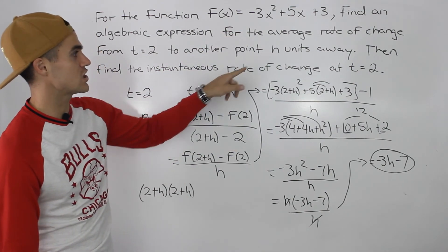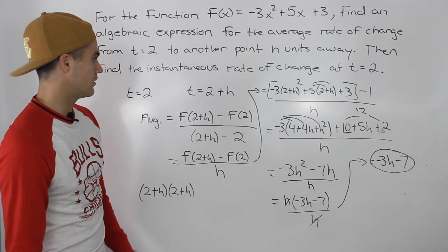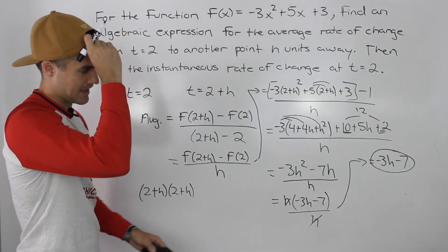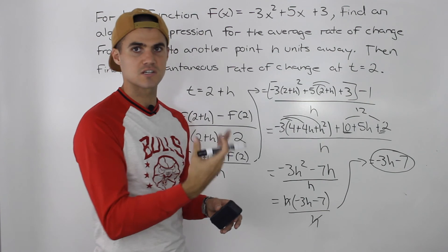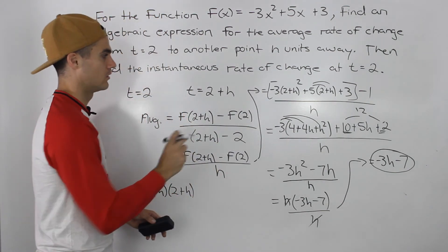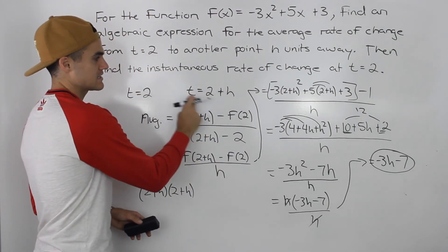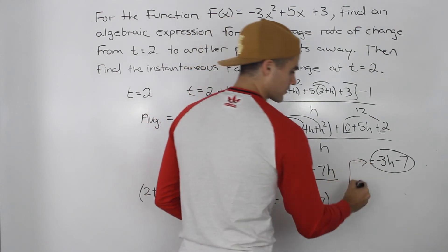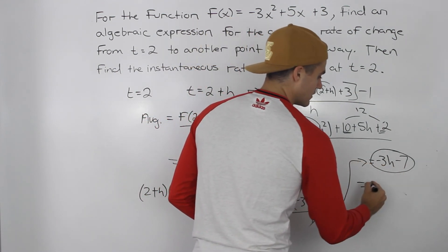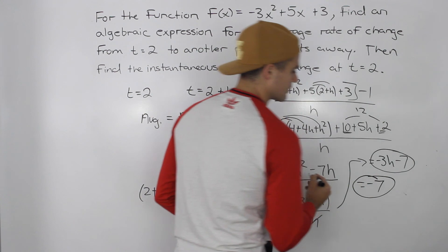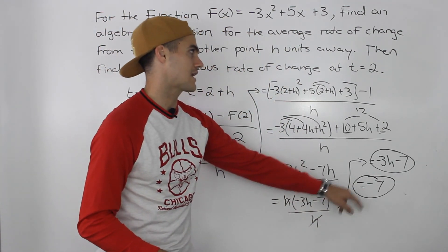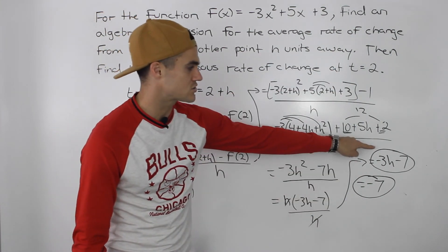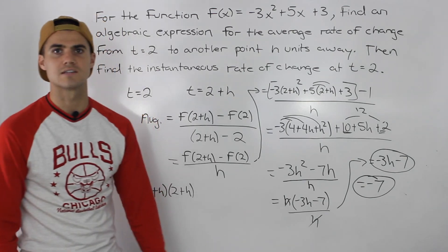Then we have to find the instantaneous rate of change at a t value of 2. To do that, we use the same process but let h approach 0, because we want h to be very small — we want this next t value to be very close to 2. So we plug in 0 for h, and we end up getting negative 7. That is the exact instantaneous rate of change for this function at t equals 2.